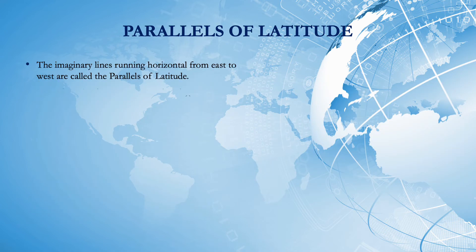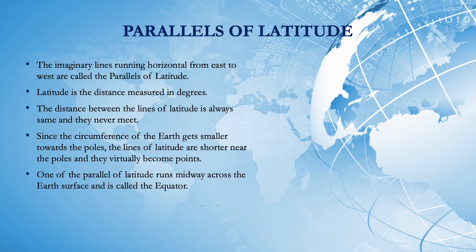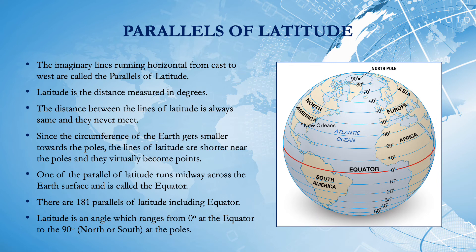The imaginary lines running horizontally from east to west are called the parallels of latitude. Latitude is the distance measured in degrees. The distance between the lines of latitude is always the same and they never meet — specifically, two lines of latitude are 69 miles apart. Since the circumference of the Earth gets smaller towards the poles, the lines of latitude are shorter near the poles and they virtually become points.